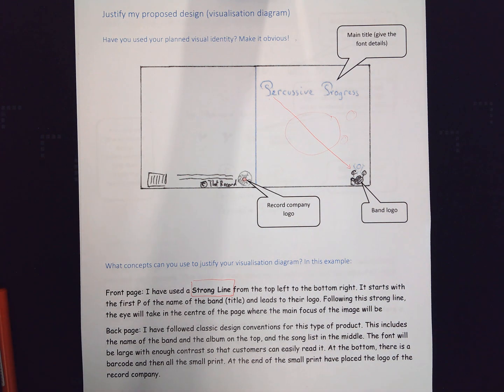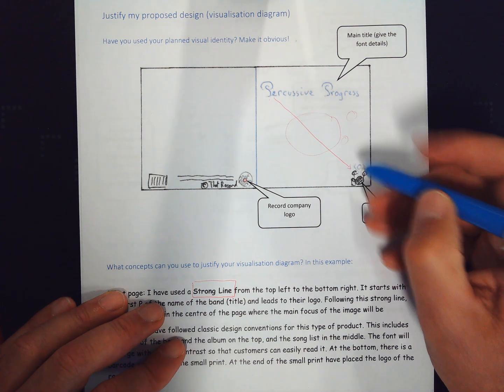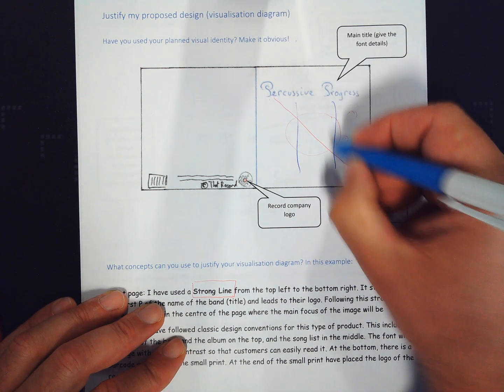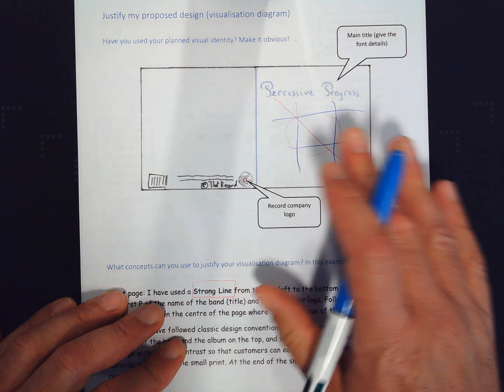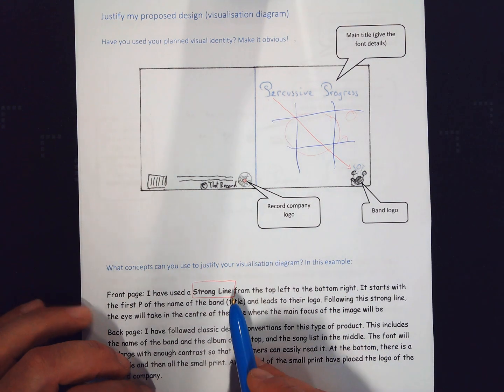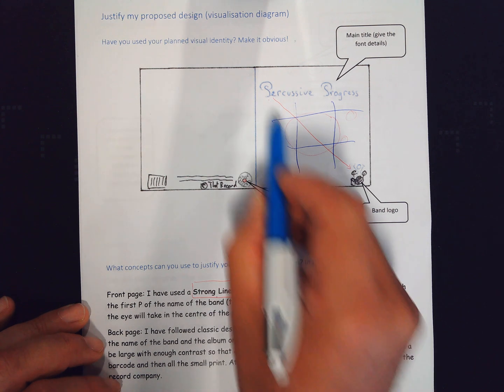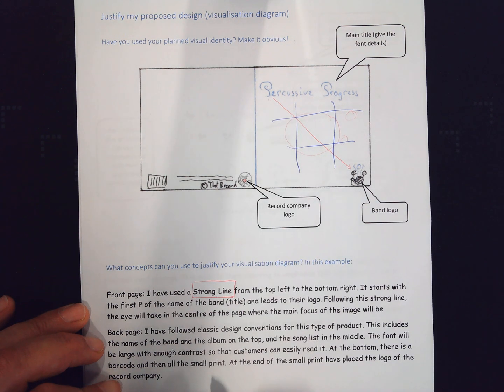I'm probably going to have in the justification for the main image itself, I'm probably going to use the rule of thirds, but I'm talking about the visual identity in here. So I'm using some key concepts, and here's the strong line, the one going down diagonally across.